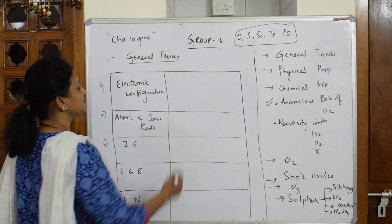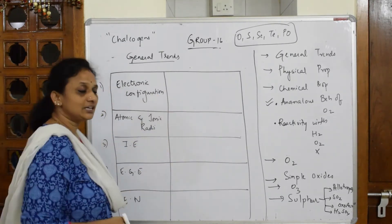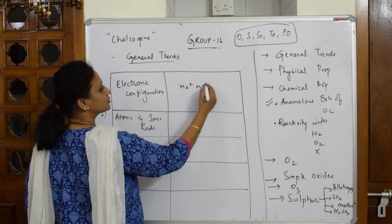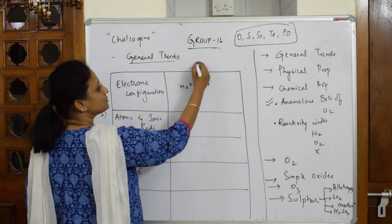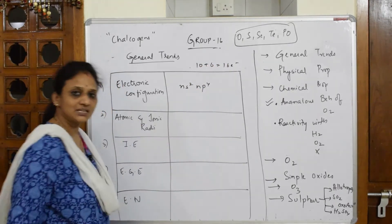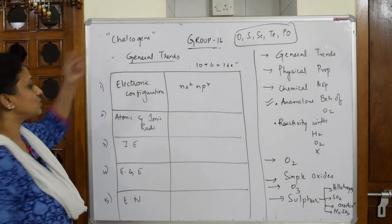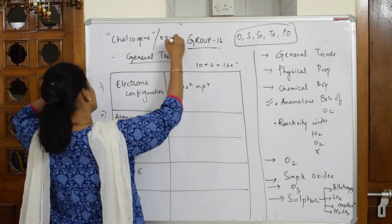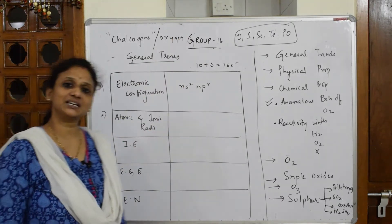In Group 16, the general electronic configuration is ns² np⁴. So 4 plus 2 equals 6, and 10 plus 6 gives 16 electrons — that's why we call them Group 16 elements, or the chalcogens, or the oxygen family since the group starts with oxygen.